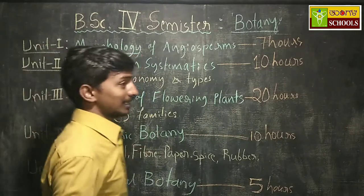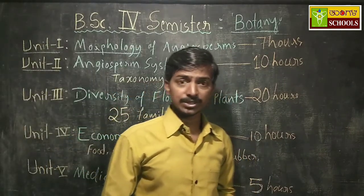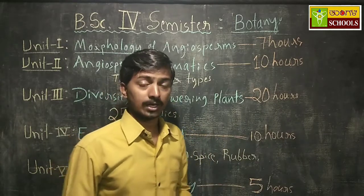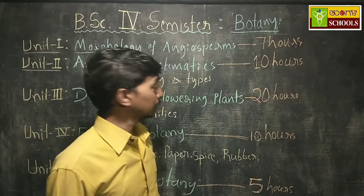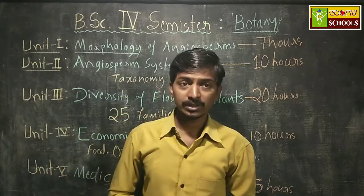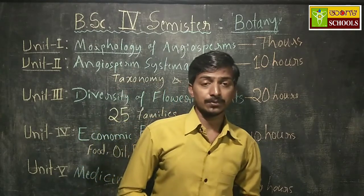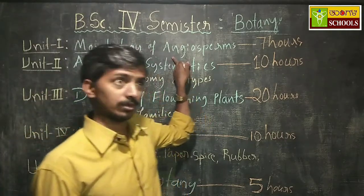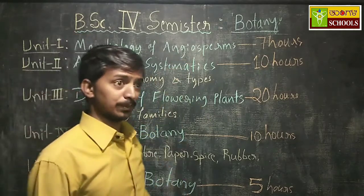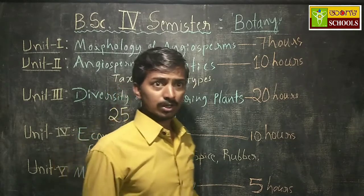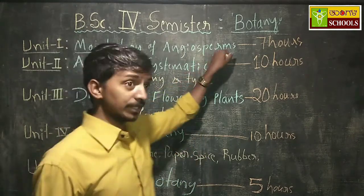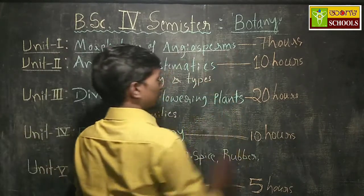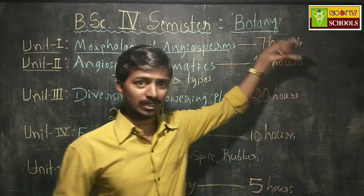We also study types of inflorescences under the morphology unit. Lastly, we study the flower — mainly the four whorls of the flower: calyx, corolla, androecium, and gynoecium — and different types of aestivation and placentation. Finally, we study fruits and their types. In PUC we learned only simple fruits and compound fruits, or true fruits and false fruits, but here we study many types of fruits in different angiosperm plants.